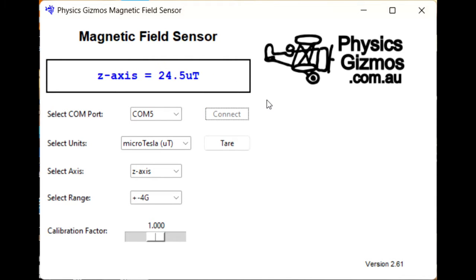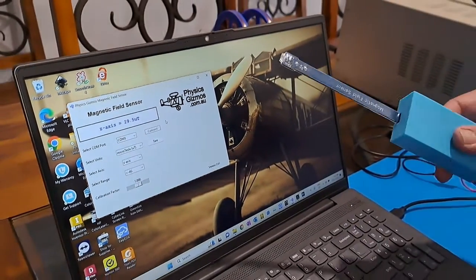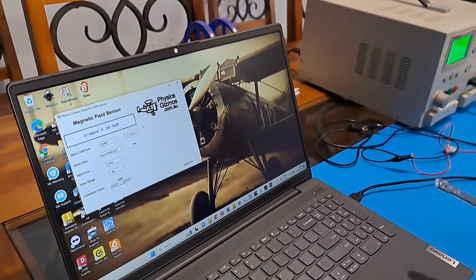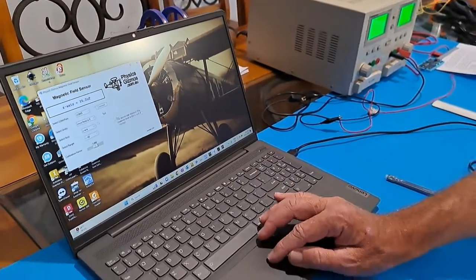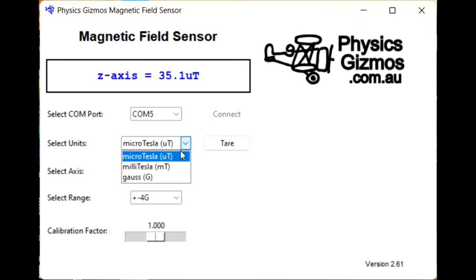You can see there, as I wave this around, it's measuring the Earth's magnetic field. So it's sensitive enough to do that. If we have a look at the settings here, you can measure in microtesla, millitesla, or gauss.